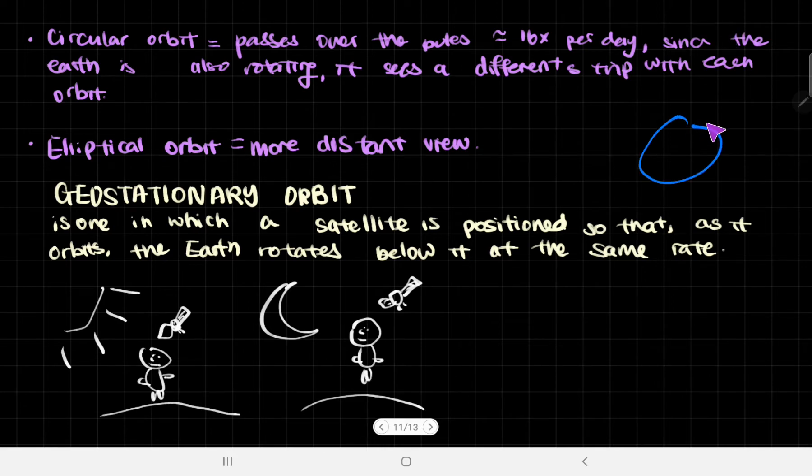The circular orbit passes over the poles around 16 times per day. Since Earth is rotating below it, it sees a different strip within each orbit. If the satellite is orbiting this way, it would see a different strip of Earth because the Earth had rotated by the time it came back. Elliptical orbits are much more distant and therefore rotate much more slowly, so they have a bigger period.